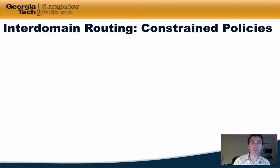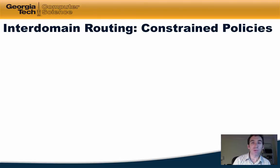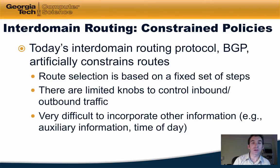Let's jump into the first example: benefits of control and data plane separation in the wide area. If you know anything about inter-domain routing, you may remember that policies or ways to set policies in inter-domain routing protocols are very constrained. Today's inter-domain routing protocol, the border gateway protocol or BGP, artificially constrains routes that any particular router in the network can select, because route selection is based on a fixed set of steps and there are a limited number of knobs to control inbound and outbound traffic.